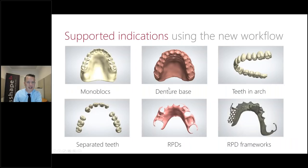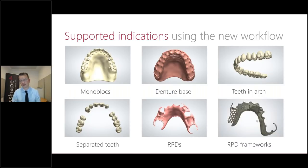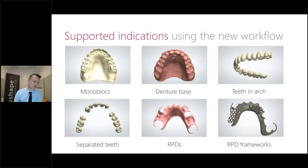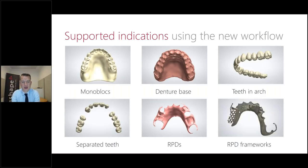We are proud to announce a new complete denture workflow with Roland and Zirkonzahn/3D where you can now mill in a Roland mill — design in 3Shape, use ZoomTreat 3D, and mill it on your Roland mill. The indications covered: monoblocks, denture base, teeth in arch, separate or individual teeth, flexible RPDs, and RPD frameworks — the full range with your Roland mill. This was just introduced at the IDT symposium less than two months ago. Really great for those who already have a Roland mill.